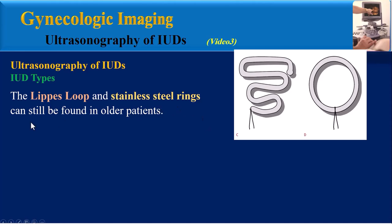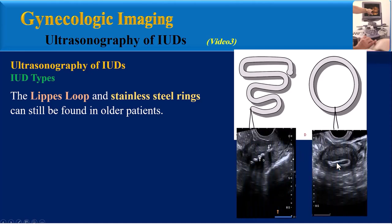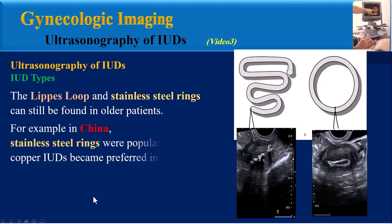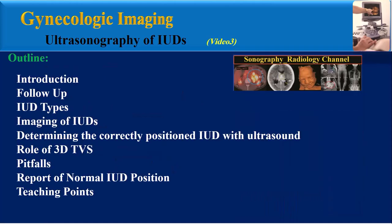A special advantage of Mirena is its positive effect on menorrhagia and hypermenorrhea, both common menstrual problems in perimenopausal women. The older types of IUDs, known as the Lippes loop and stainless steel rings, can still be found in older patients. These ultrasound images show the appearance of these older IUD types. For example, in China, stainless steel rings were popular before copper IUDs became preferred in 1994.